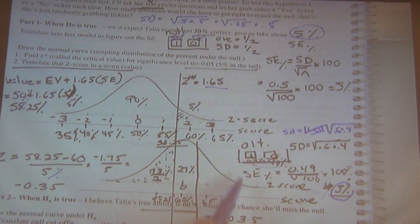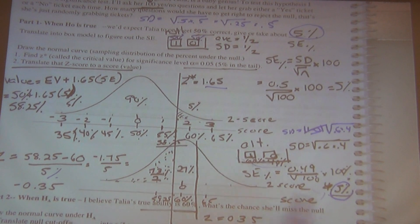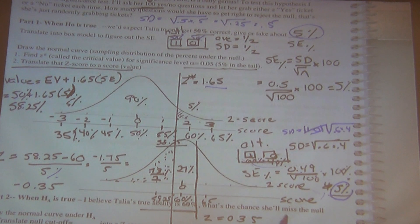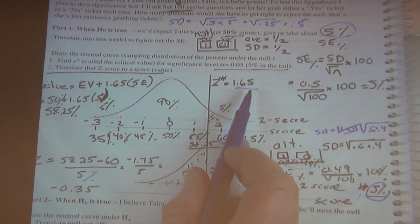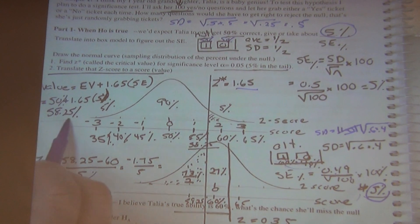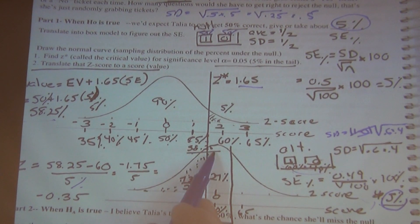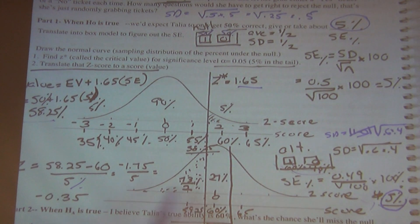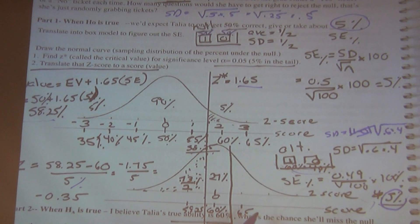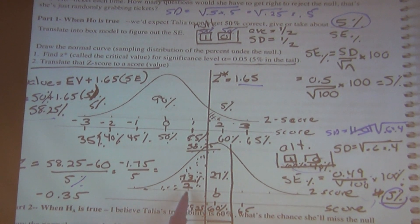So we've got pretty much the same shape to our sampling distributions. Now, what do we do? We say: this is 1.65 here, and we got a 58.25 cutoff. Now we want to translate that on this new alternative hypothesis that has the same standard deviations.